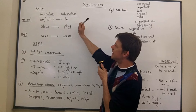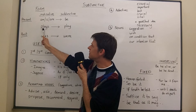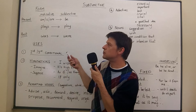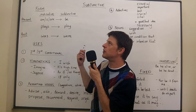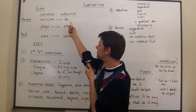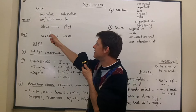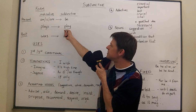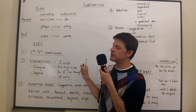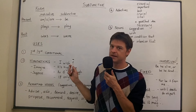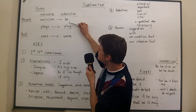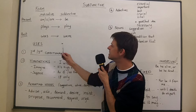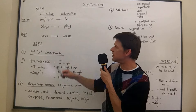With another verb like 'play,' with I, you, or they, it's just 'I play' — and the subjunctive is the same: I play. But with he and she, the normal form is 'he plays,' while in the subjunctive we just use the first form of the verb: 'play.' That's the only difference in the present tense.